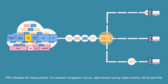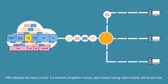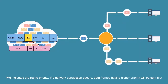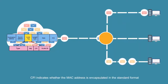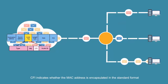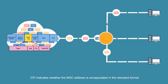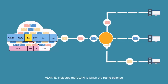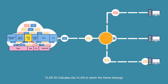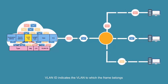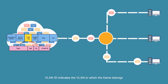PRI indicates the frame priority. If network congestion occurs, data frames with higher priority will be sent first. CFI indicates whether the MAC address is encapsulated in a standard format. VLAN ID indicates the VLAN to which the frame belongs.